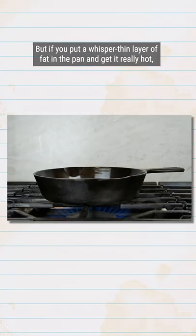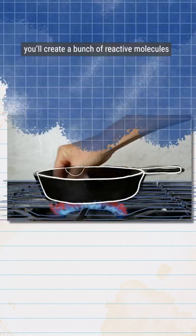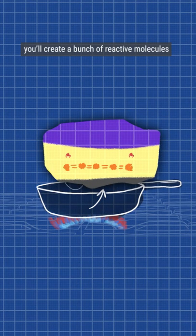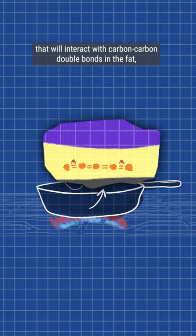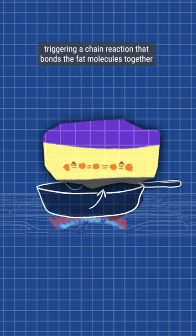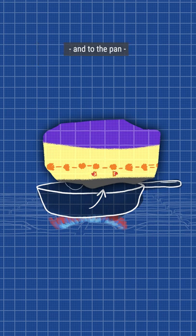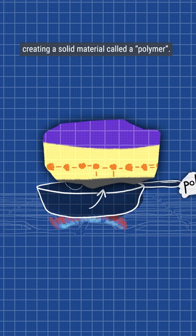But if you put a whisper-thin layer of fat in the pan and get it really hot, you'll create a bunch of reactive molecules that will interact with carbon-carbon double bonds in the fat, triggering a chain reaction that bonds the fat molecules together and the pan, creating a solid material called a polymer.